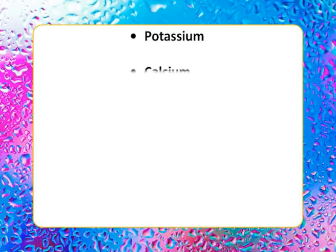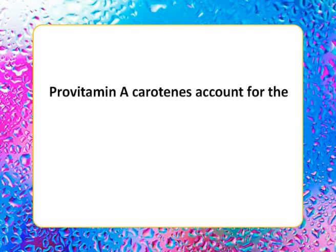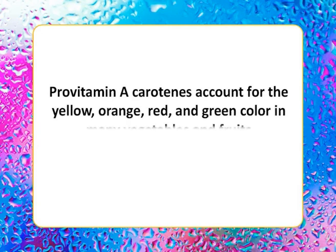Fruits are a good source of micronutrients — vitamins and minerals — which are an essential part of the human diet. Citrus fruits are rich sources of vitamin C. All fruits contain important minerals such as potassium, calcium, magnesium, phosphorus, iron, and zinc. Minerals are basic components in secondary metabolic pathways that produce valuable phytochemicals for normal human health. Vegetables and fruits are the main sources of vitamin A for human health. Provitamin A carotenes account for the yellow, orange, red, and green color in many vegetables and fruits.